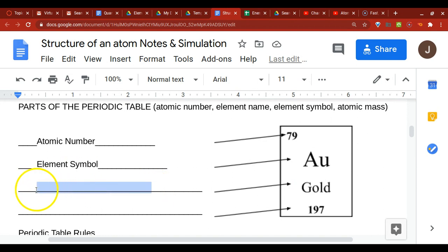Then we have, of course, the element name. And then the last information we have is our atomic mass. And this tells us the mass of one element. So this tells us the mass of gold is 197 atomic mass units.